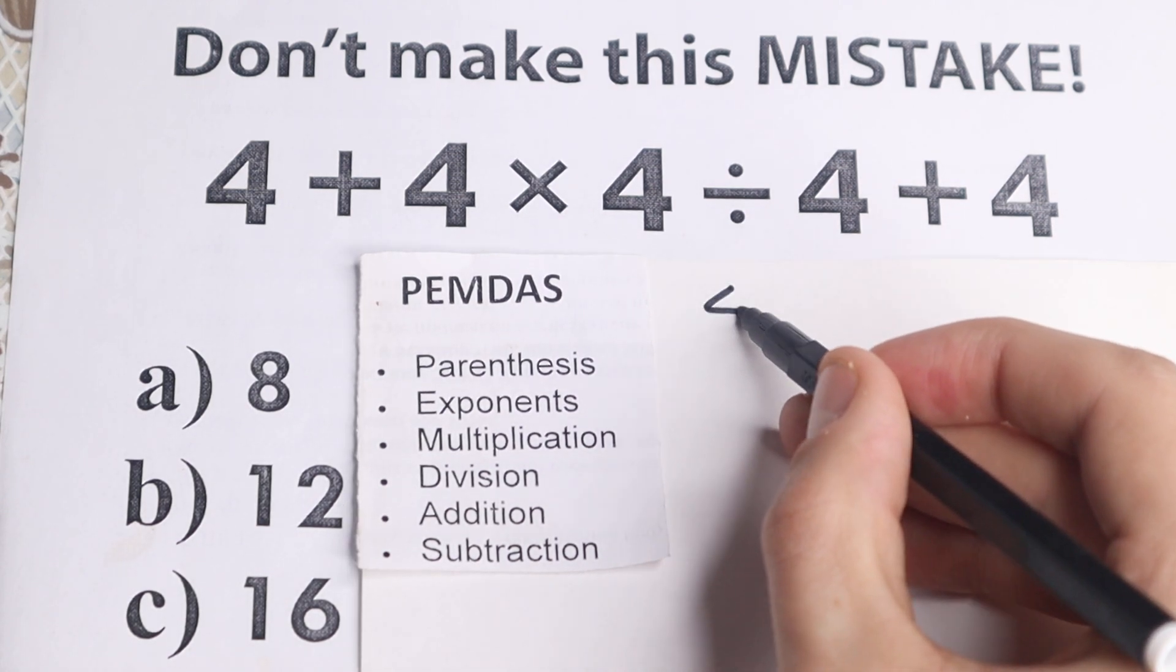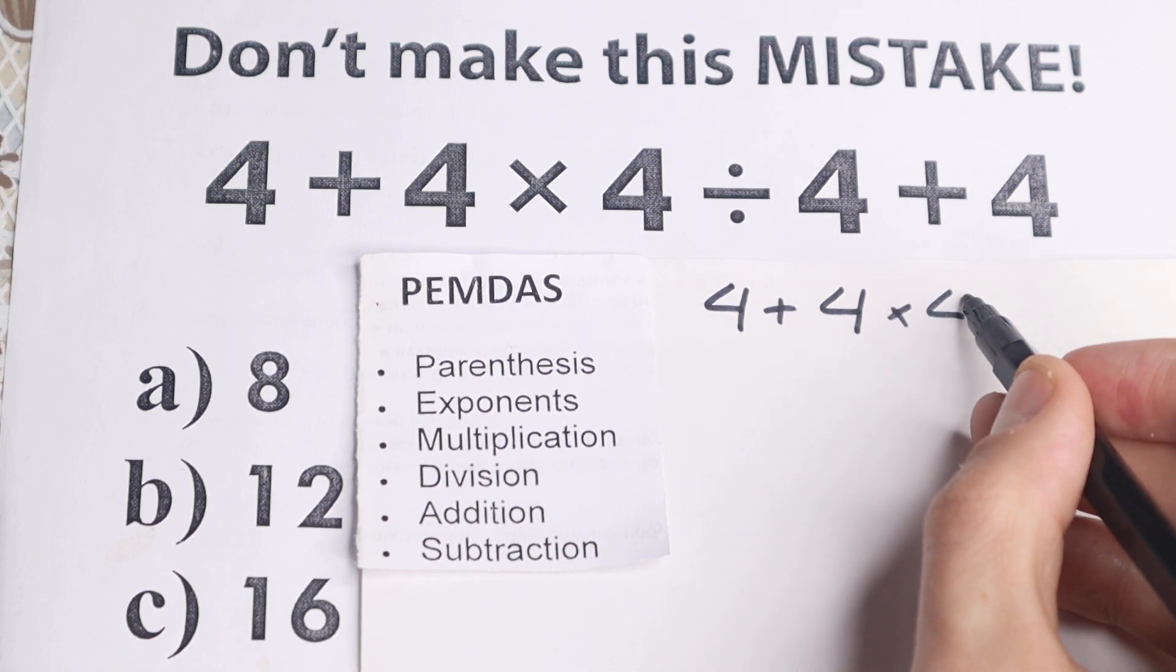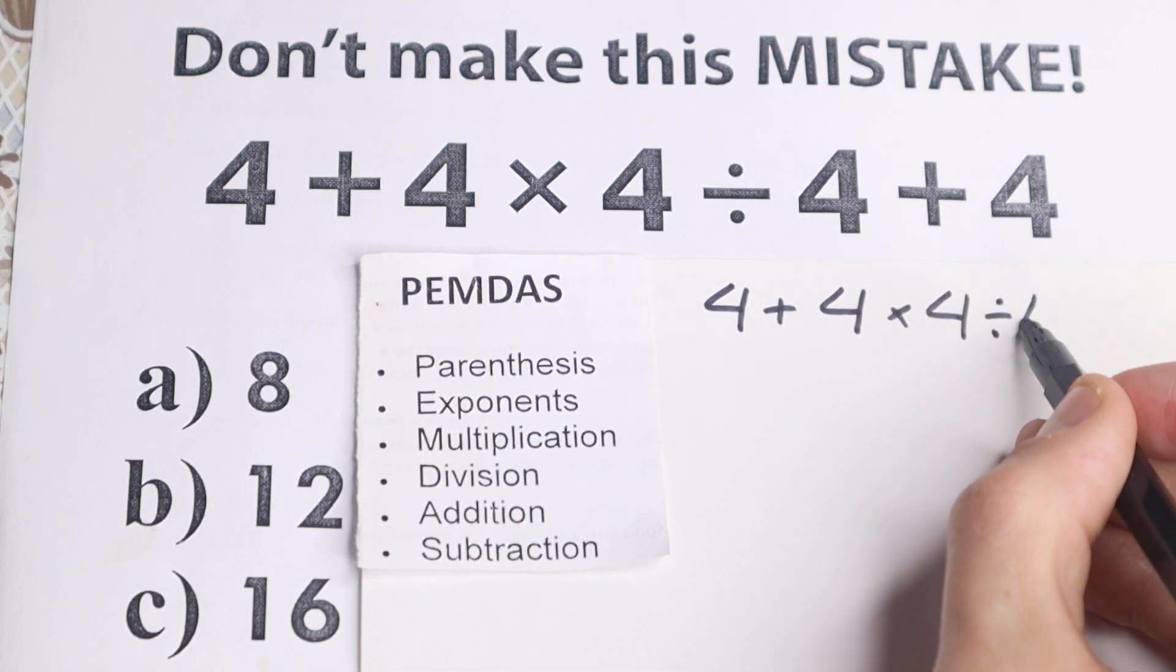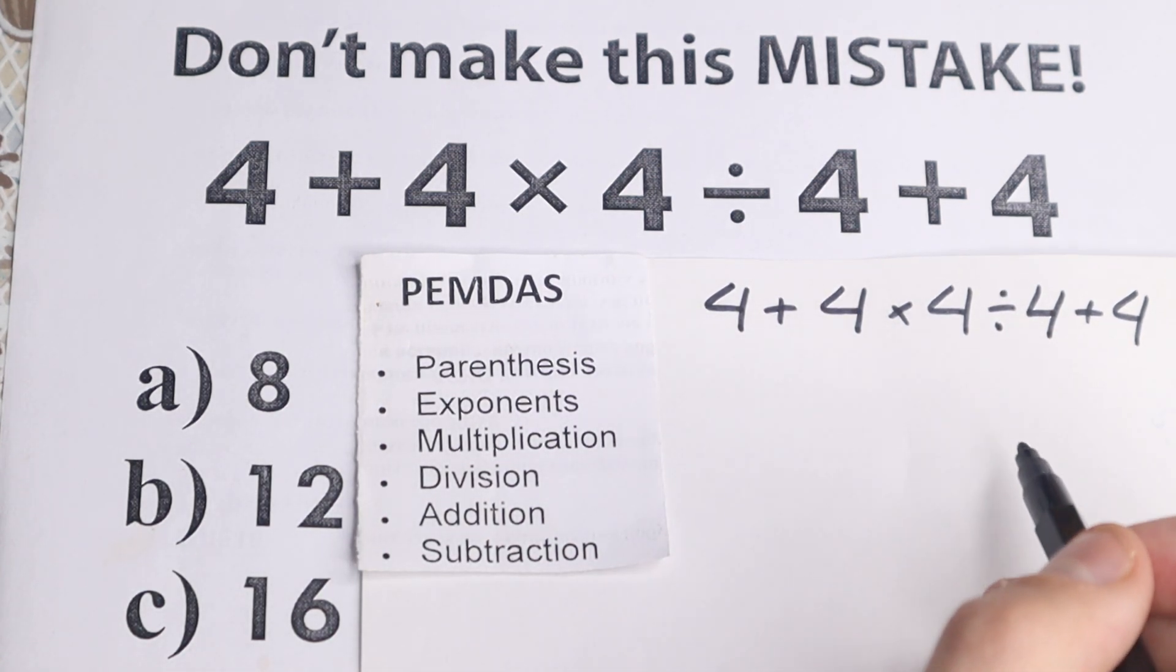So I just rewrite this problem, so 4 plus 4 times 4 divided by 4 and plus 4. So we have this question right here.